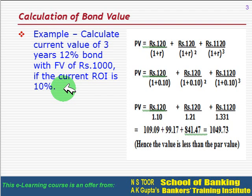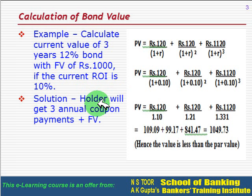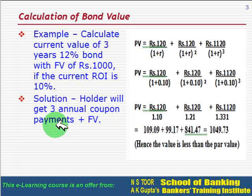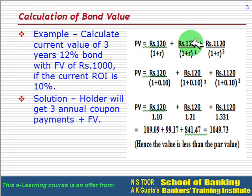The holder will get three annual coupon payments of rupees 120 each. This is the coupon payment for the first year, this is for the second year, and this includes the coupon payment of 120 plus the face value of the bond for the third year.